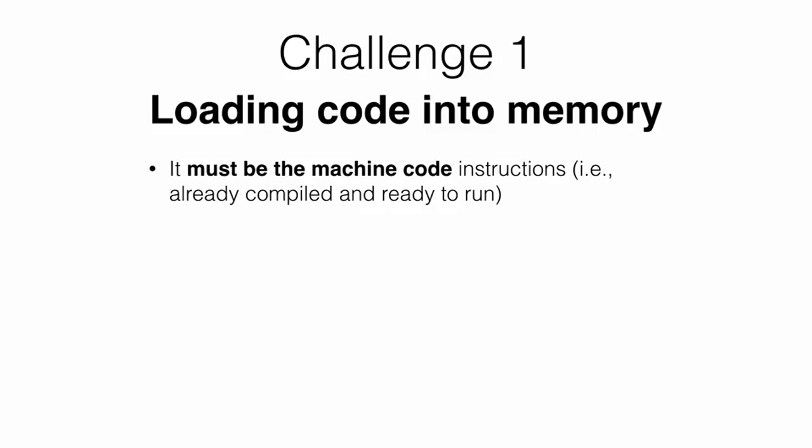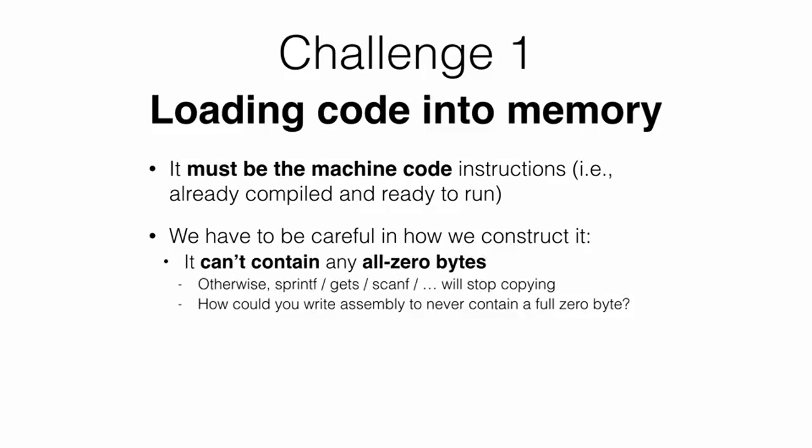Attacks can also affect data directly: an attacker might overrun a buffer to modify a secret key to one known to him, modify state variables to bypass authorization checks (as shown with the authenticated flag), or modify interpreted strings used in subsequent commands sent to other programs — for example, SQL commands sent to databases, which could be overwritten to give the attacker arbitrary access. A bug can also permit reading past the end of a buffer, leaking secret information. A program that echoes back a user-specified number of characters can leak memory contents if the specified length exceeds the actual message length.